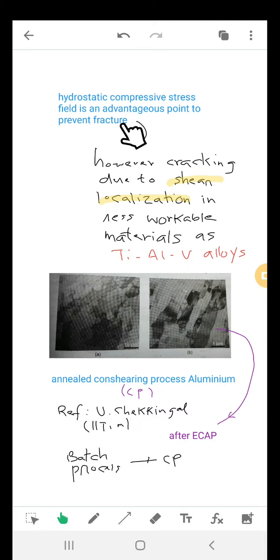However, there are some less workable materials, those where plastic deformation is limited, like titanium-aluminum-vanadium alloys, where some cracking phenomena can take place due to shear localization. ECAP is a batch process, not a continuous process, however it can be made into a continuous one by a process called contouring process or CP process.